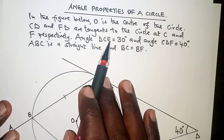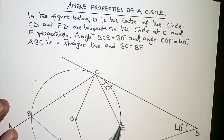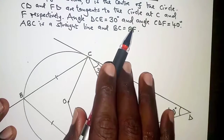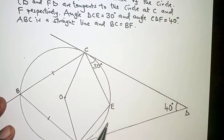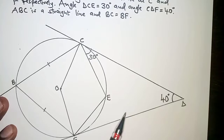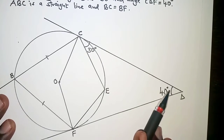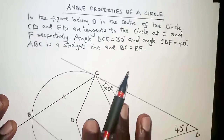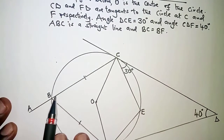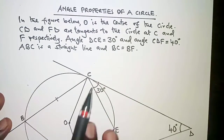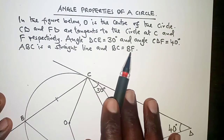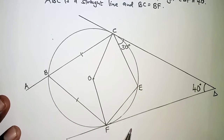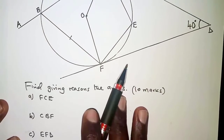Angle DCE is 30 degrees — that is here — DCE, and angle CDF is 40 degrees, that is CDF, right here 40. ABC is a straight line, and BC is equal to BF.